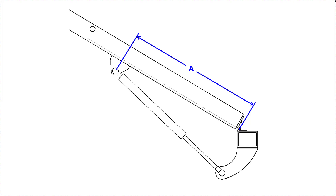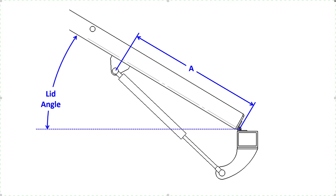We will be setting up a spreadsheet which will allow us to try different values for dimension A, adjust the lid angle from 0 to the maximum, and determine the resultant forces to see if they will be sufficient. There are only two forces we need to worry about: the weight of the lid, assumed acting at the center of mass, and the force of the gas spring. The force calculations are pretty straightforward since we just have to balance moments about the hinge. However, analyzing the geometry and calculating the important leverage distances will be a little tricky. Trigonometry allows us to calculate angles and distances associated with right triangles.